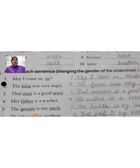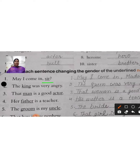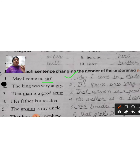Let's start with the first example. Sentence number one: 'May I come in, sir?' You know what sir will become? Obviously — madam. So you will write: 'May I come in, madam?' Sir is replaced by madam in the sentence.